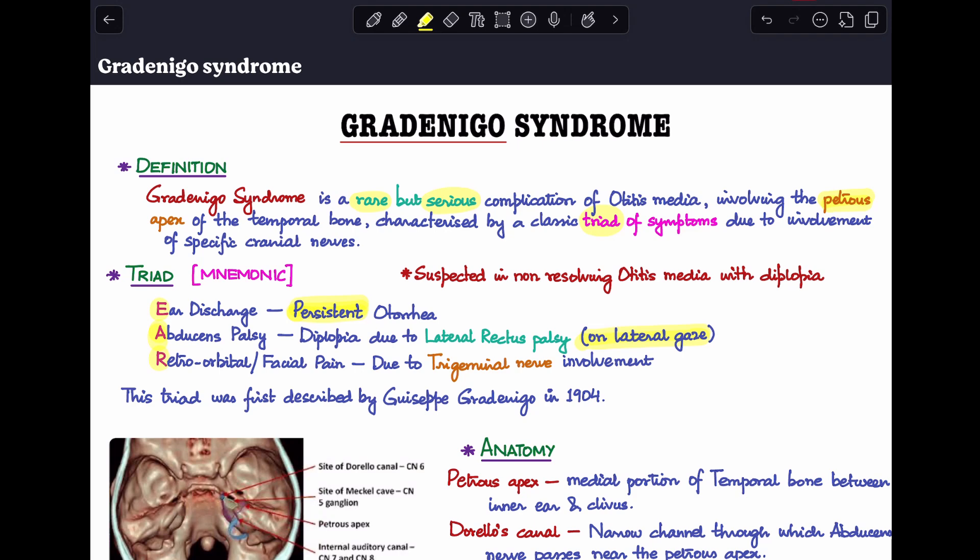When do we suspect Gradenigo's syndrome? It is a complication of otitis media. You can see it in acute otitis media as well as chronic otitis media. Whenever you see a non-resolving otitis media with diplopia presenting, you should definitely suspect that possibly this is a case of apical petrositis leading to the formation of Gradenigo's syndrome.